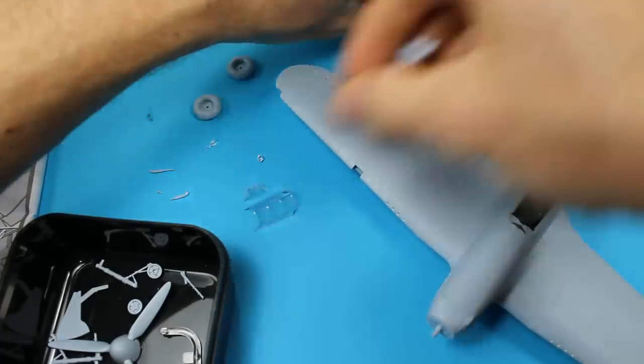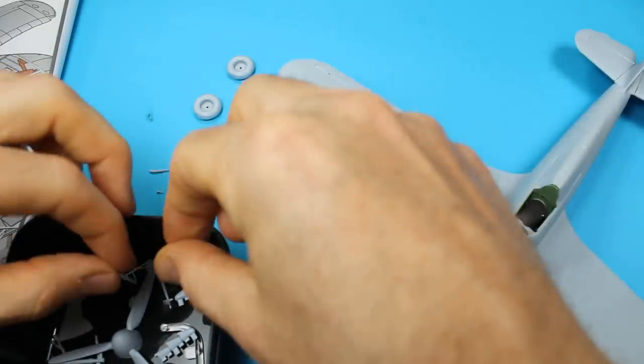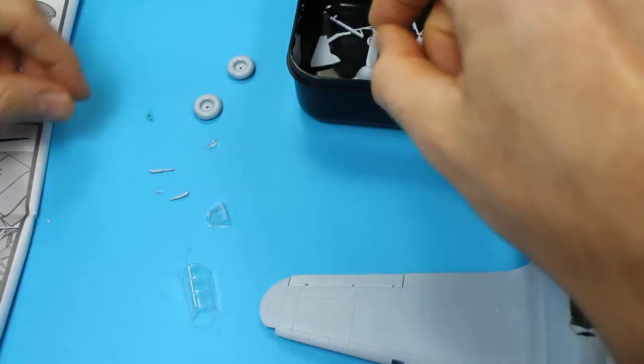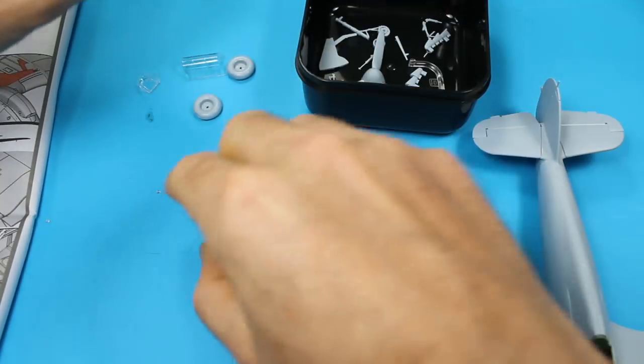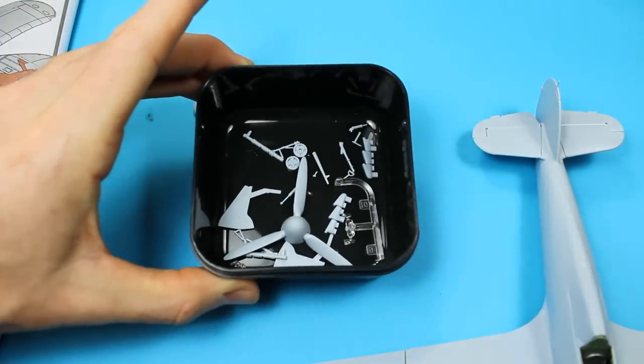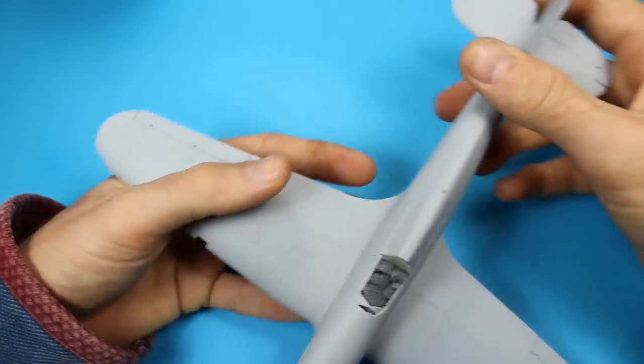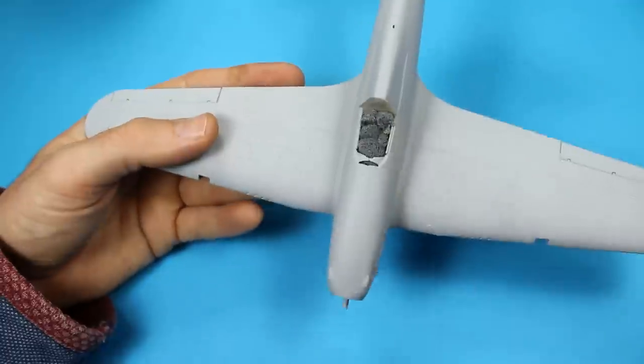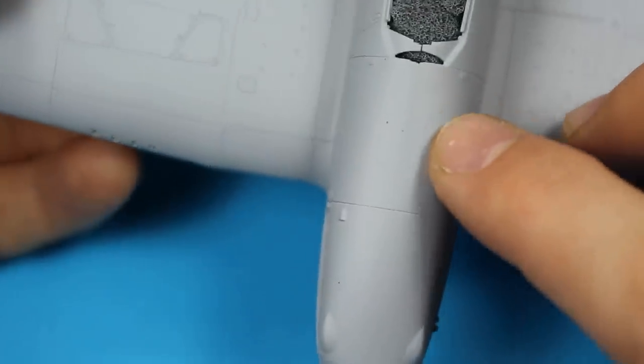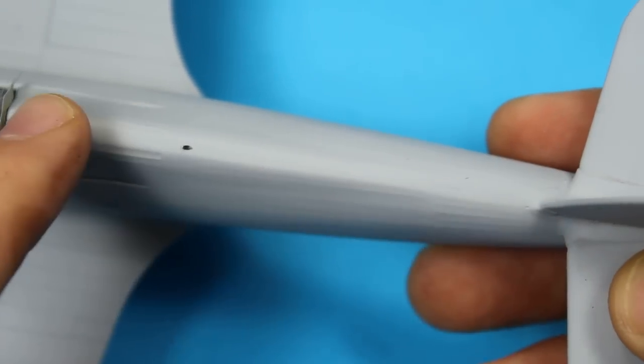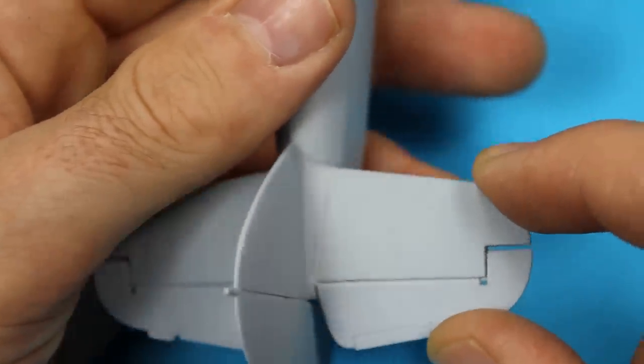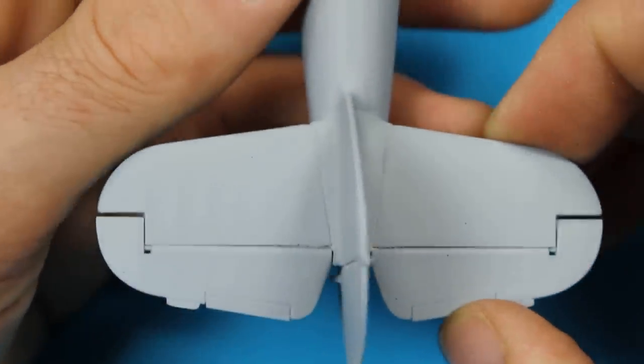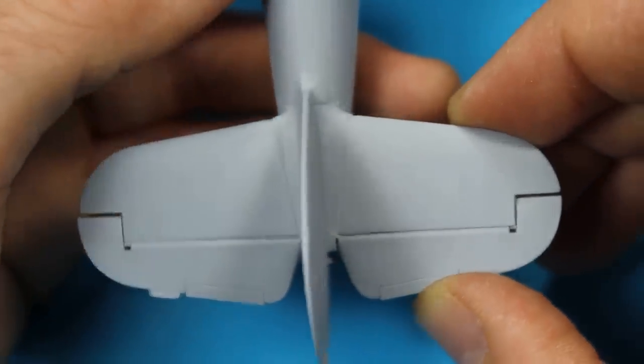I've gone around the airframe now and everything's sanded up - I'm happy with it. Got the small parts off the sprue now ready for painting, because I like to paint all the parts individually. Got the prop done with the nose cone - just glue it together and blend in any of the joins that don't look right.